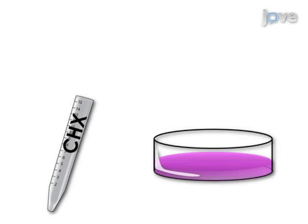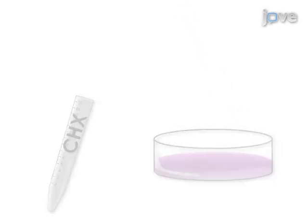This is achieved by adding cyclohexamide to the growth media in order to freeze ribosomes on the mRNA, thereby preventing ribosome runoff.